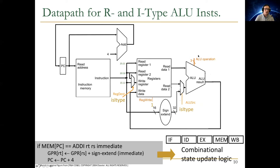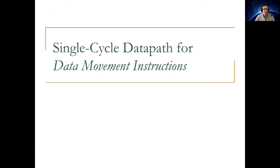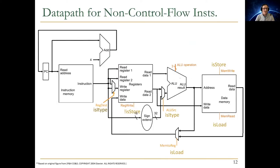The ALU operation needs to be specified by control signals, and register write must be enabled since R-type and I-type ALU instructions always write to a destination register. We also showed the data path for data movement instructions in lecture 11 — actually the data path for all non-control-flow instructions, including R-type, I-type, loads, and stores.